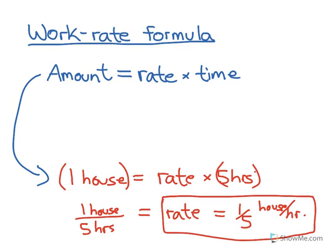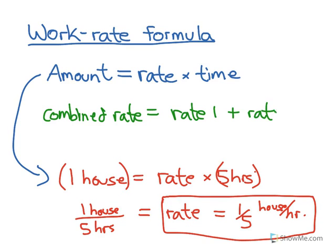The last thing we want to think about is total rate. So often they'll give us some information about a certain individual, information about somebody else, and then they'll say, what if they work together? So we want a combined rate equals rate one plus rate two, and this should be pretty easy to see. The rate of the first person can be added to the rate of the second person to get the combined rate.